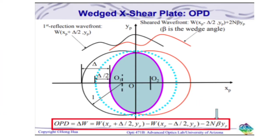This is the case in which a wedged shear plate is used. Note how the optical path difference is now dependent on an additional term, beta, which is our shear angle.